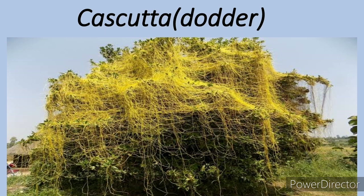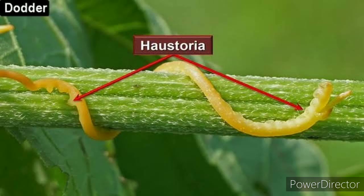Dodder is very much diversified in tropical and subtropical regions of the world. It gets its nutrition from the host plant and absorbs its food through haustoria. In singular form it is known as haustorium, and in plural form it is known as haustoria. Haustoria is a root-like structure that penetrates the tissue of the host plant.